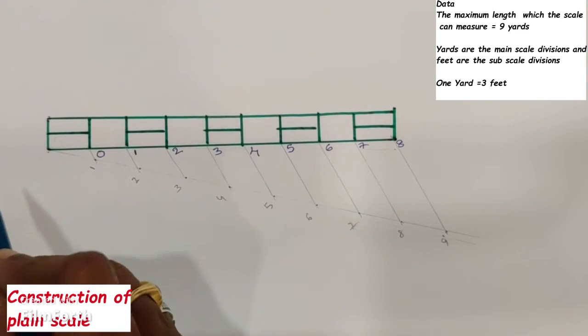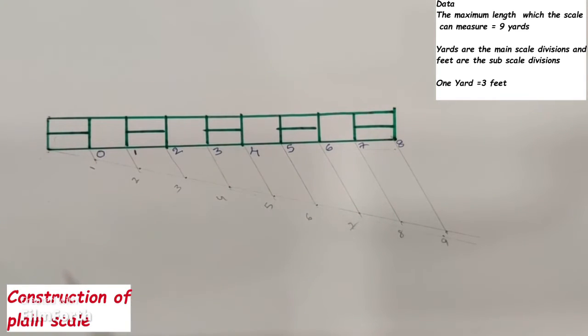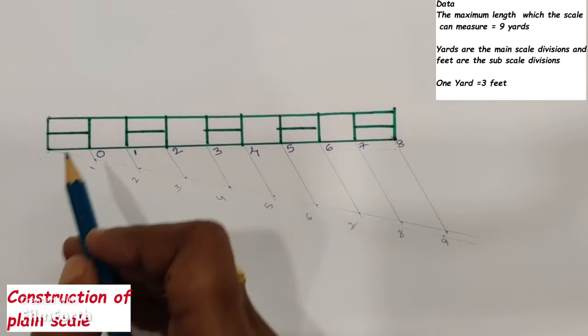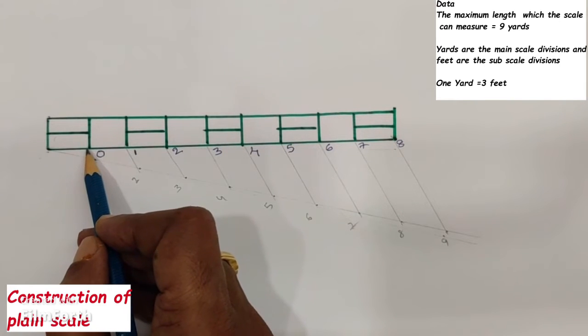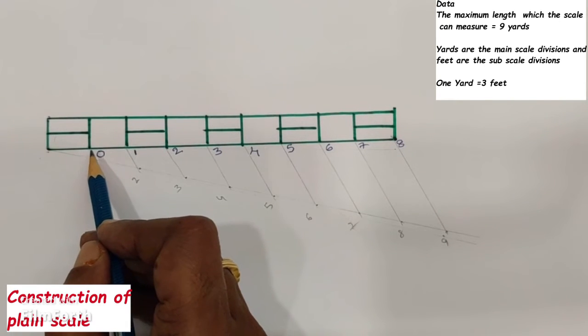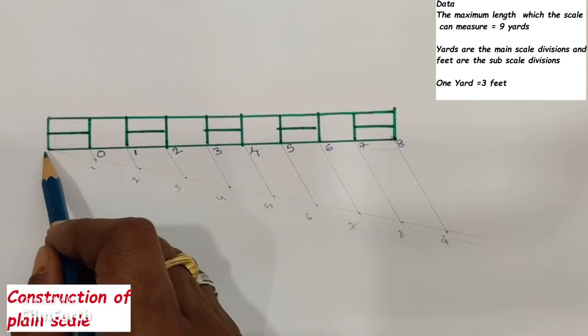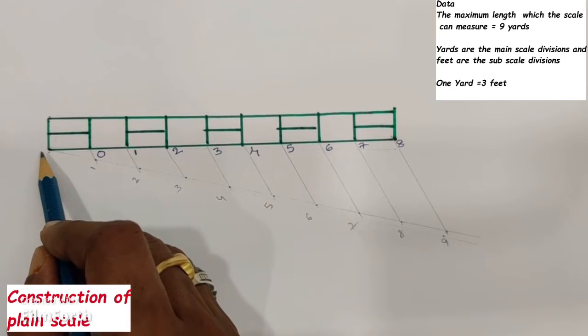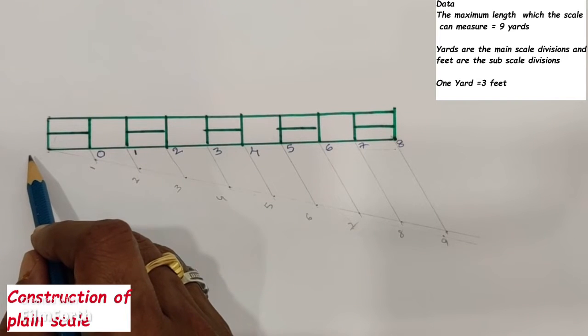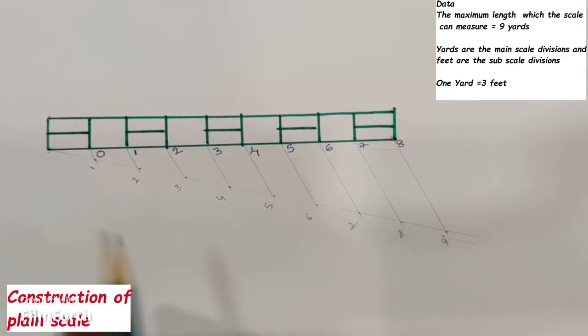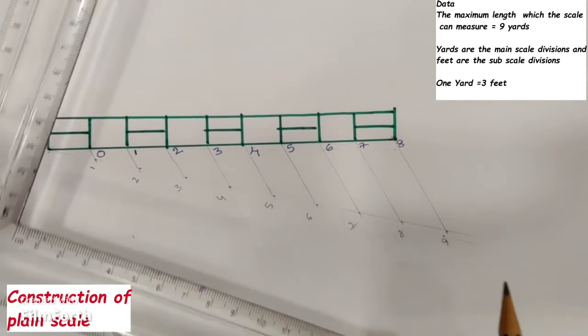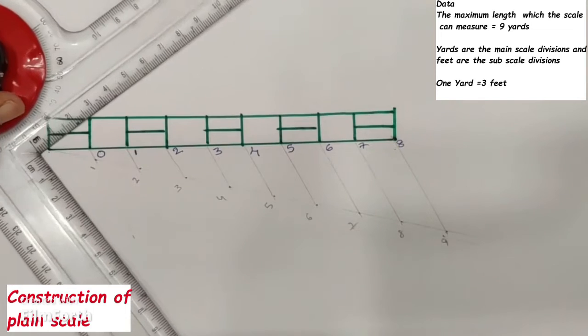One yard is equal to three feet, so we need to divide the first main division into three equal parts. For that, we will use the acute angle line method.